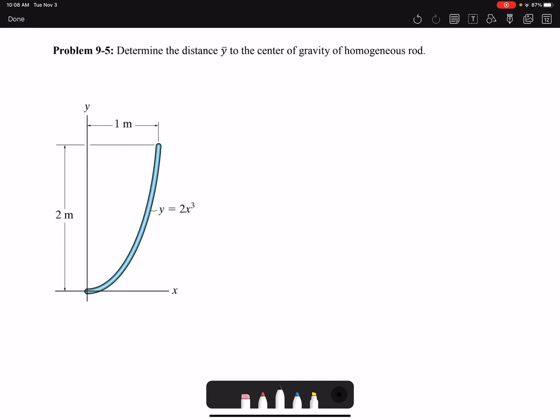Hello everyone, in this video I'm going to solve problem 5 of chapter 9: determine the distance y̅ to center of gravity of homogeneous rod. Because it's homogeneous, the center of gravity and center of geometry centroid are going to be the same.